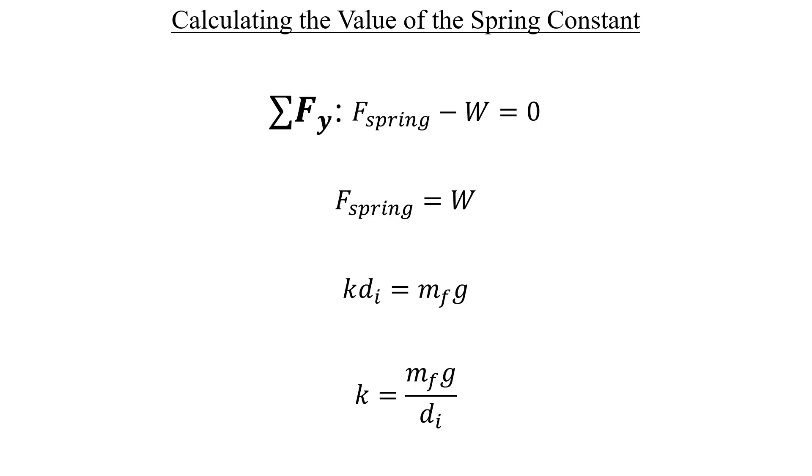Then we can divide both sides by d sub i to isolate k. What's nice is that if we plug in the values for these using negative signs on g and d sub i due to the coordinate system choice, k comes out to be exactly 21 newtons per meter, which we can express using three significant figures to keep consistent with everything else.